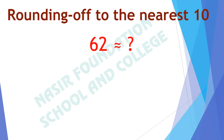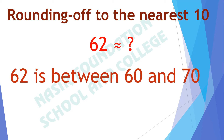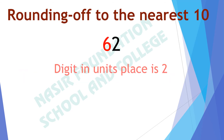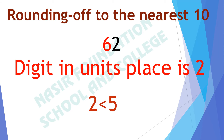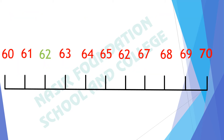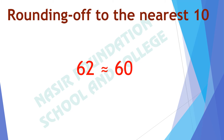Next number: 62. How do we round it off to the nearest 10? 62 is between 60 and 70. We draw the number line from 60 to 70. In 62, the digit in the units place is 2, and 2 is less than 5. Placing 62 on the number line, 62 lies nearer to 60 than to 70. So we can say that 62 is nearly equal to 60 — we round it down.